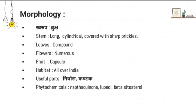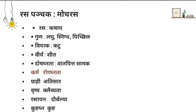Regarding phytochemicals, Shalmali contains Naptaquenon, Lipel, Lipayal, and Beta-Cetosterol. For Rasa Panchaka, Mocha Rasa is the useful part used for internal administration. The Rasa Panchaka of Mocha Rasa: it has Kashaya Rasa; Gunas are Laghu, Snigdha, and Pichila; Vipaka is Kattu; and Virya is Shita. It is one of the Vichitra Pratyarabda Dravya.